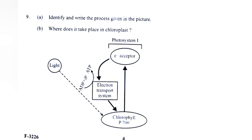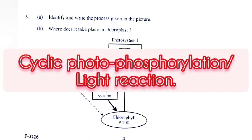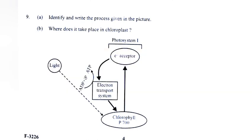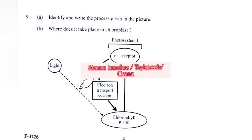A) Identify and write the name of the process given in this picture. Answer: cyclic photophosphorylation or light reaction. B) Where does it take place in the chloroplast? Answer: stroma lamella or thylakoids or grana.